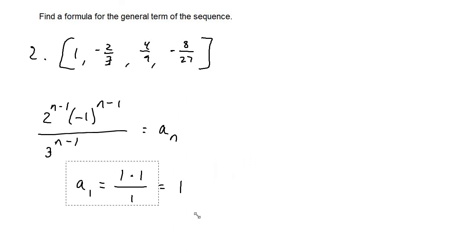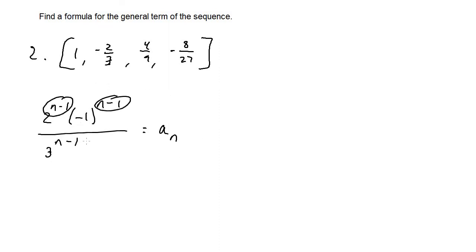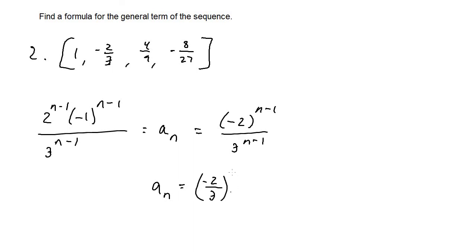Since the formula is confirmed, we can simplify it. All exponents are n minus 1, so we can group: 2 times negative one to the (n-1) over 3 to the (n-1). Since numerator and denominator share the same exponent, we combine them into negative two thirds, the entire thing to the (n minus 1) power. That is the formula for the general term of the sequence.